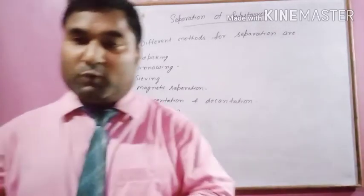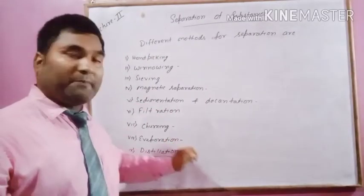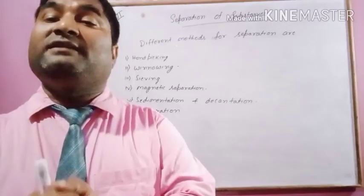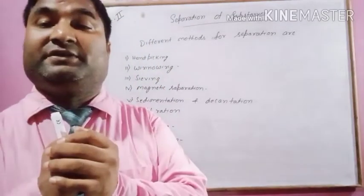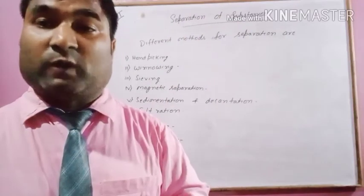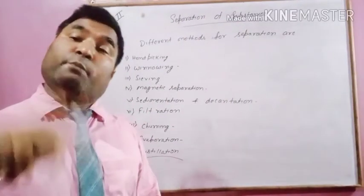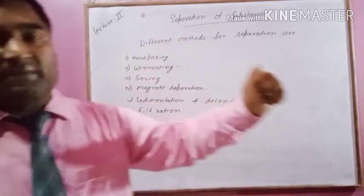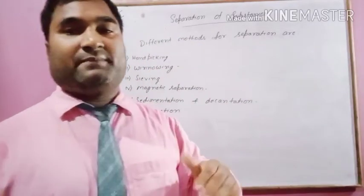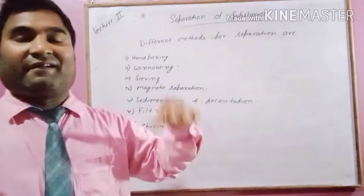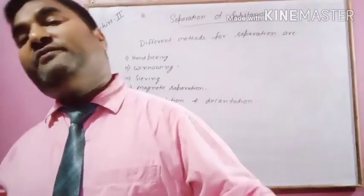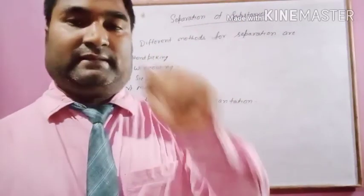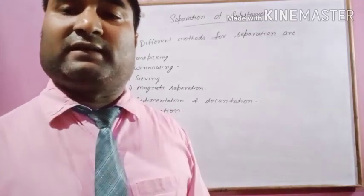The ninth method is distillation. Evaporation and distillation are related. The difference is that in evaporation we only obtain the solid impurity and the water is lost. But in distillation we obtain both — the water and the salt. We will discuss all nine methods in detail one by one in the coming videos. If you have any problems, please ask. Thank you.